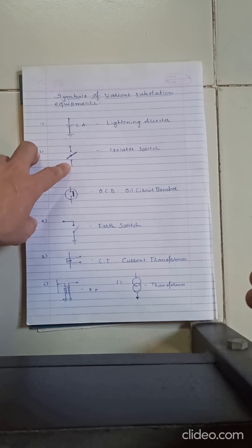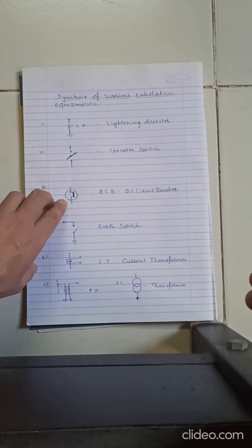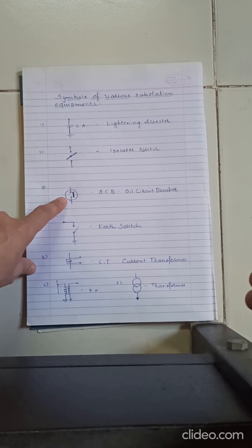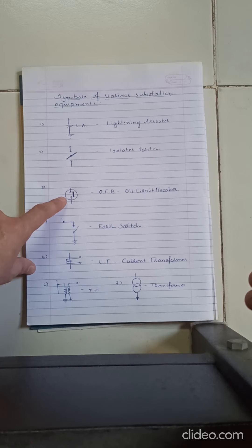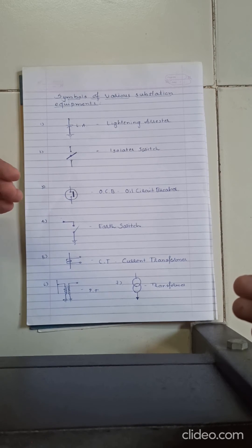And the third part or third symbol is called circuit breaker. It's called OCB in short, which is short form of oil circuit breaker. Circuit breaker's use you already know.